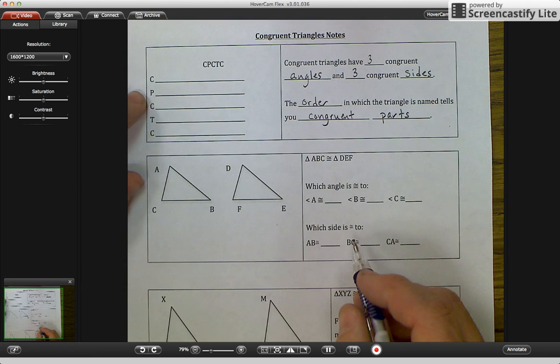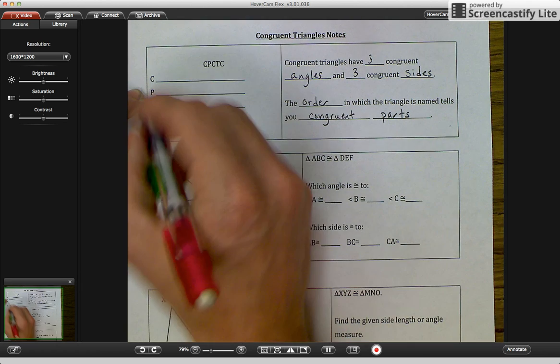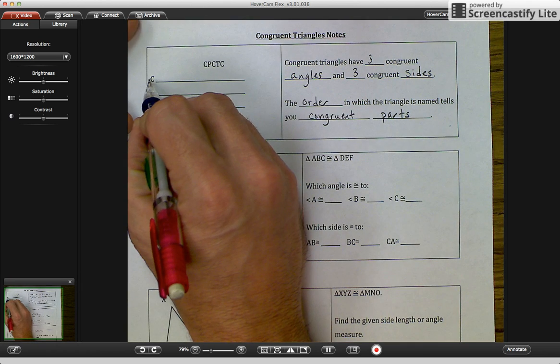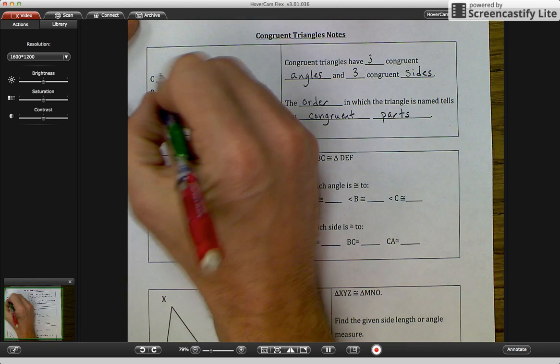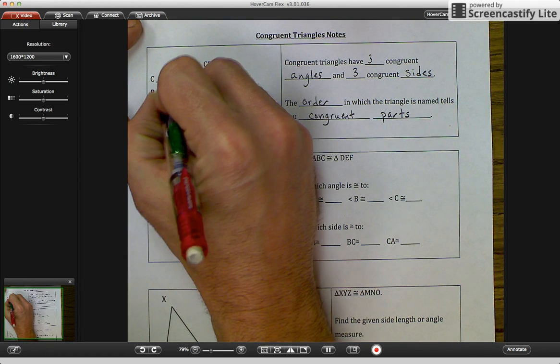Let's go over here to where it says CPCTC. This is an acronym. So each letter here stands for a different word. The first C stands for corresponding.